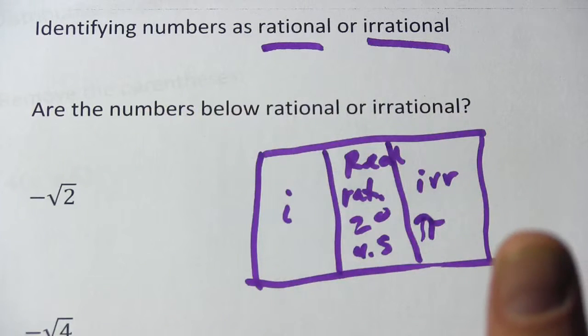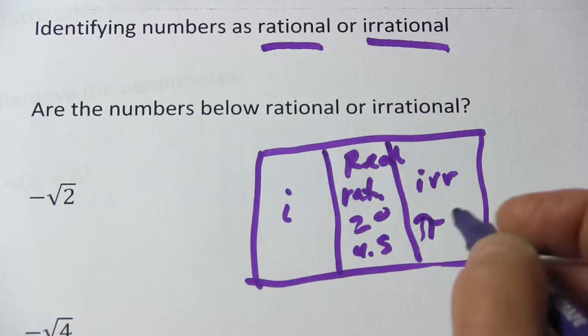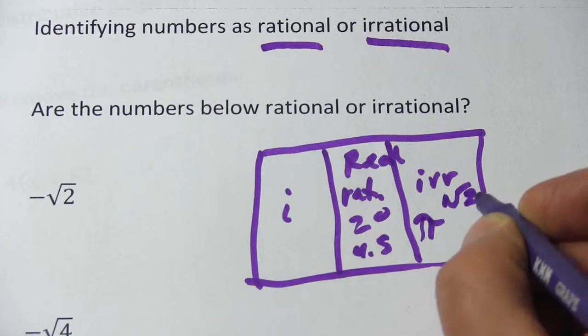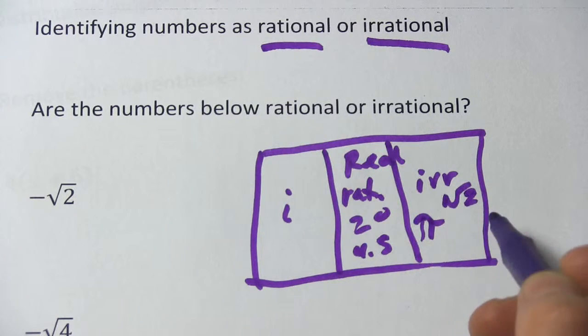If your calculator screen had an infinite screen, it would go on, that number would go on forever. So pi is one to remember. The square root of 2 is another irrational number. It never repeats itself, and the decimal goes on forever.